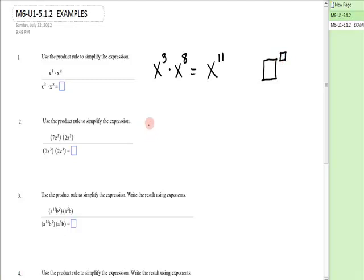Next, I have 7z³ times 2z³. Numerical coefficients are multiplied together: 7 times 2 is 14. For z, use the product rule: 3 plus 3 is 6, so 14z⁶.